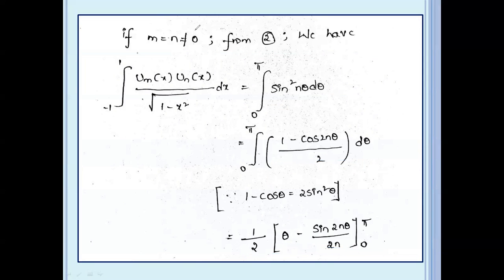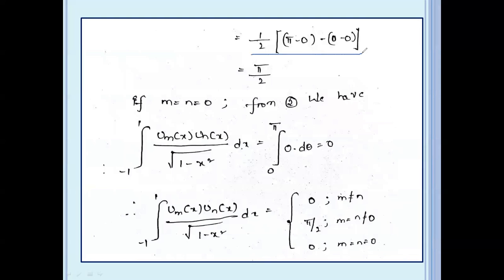Applying limits: 1 by 2 into (π minus 0 minus 0 minus 0). The answer is pi by 2.